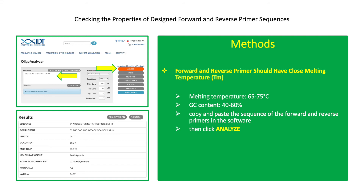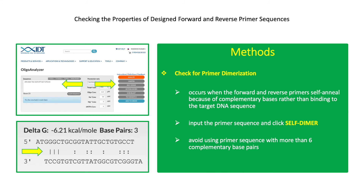Copy and paste the sequence of the forward and reverse primers in the OligoAnalyzer software, then click Analyze. Check for primer dimerization. Primer dimerization occurs when the forward and reverse primers self-anneal because of complementary bases rather than binding to the target DNA sequence. This may be prevented by increasing the annealing temperature on the PCR thermal cycling conditions and using less volume of primers in the PCR mix. Avoid choosing regions rich with repeating GC and AT bases, as this may cause self-primer dimerization. In OligoAnalyzer, click Self-Dimer, take note of the number of complementary base pairs, and avoid using primer sequences with more than 6 complementary base pairs.